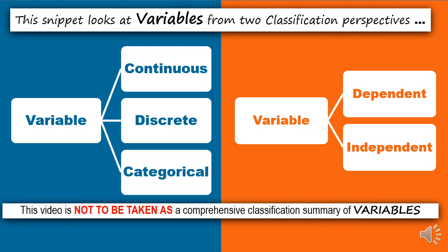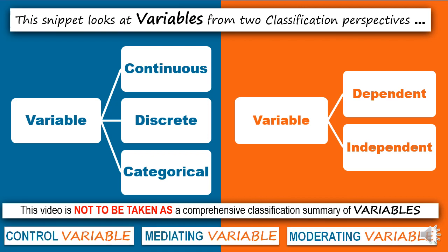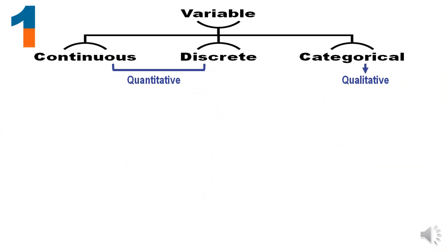This video is not meant to be a comprehensive classification of the large space called variables. As an example, something like a control variable, a mediating variable, or a moderating variable is not discussed at all in this video. Let us start with the classification of continuous, discrete, and categorical.